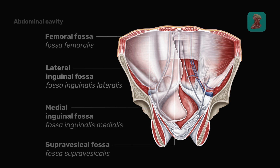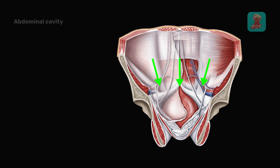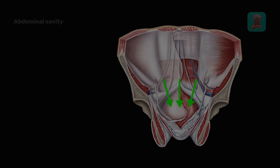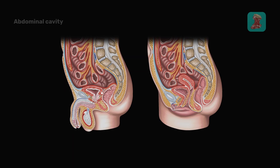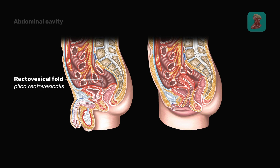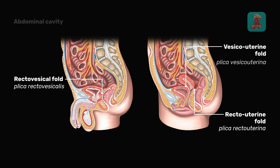Let us now go into the lesser pelvis. The following structures are present in the lesser pelvis: the recto-vesical fold in men; the recto-uterine fold; and the vesico-uterine fold in women.